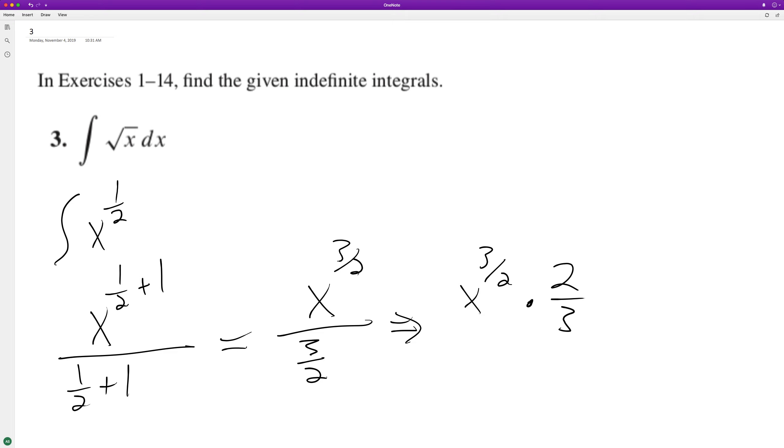So ultimately, our integration, we get 2 thirds x raised to the 3 halves plus c, which is a general constant.